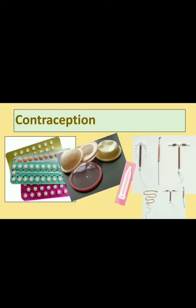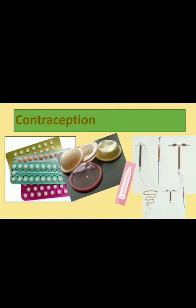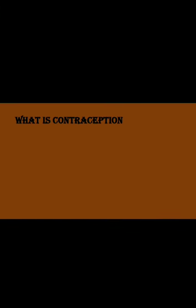Contraception saves women's lives and prevents unintended pregnancy. The use of contraception improves the quality of life, makes health better, and reduces emotional stress. There are benefits enjoyed by the couples, children, other family members, the community, and the country. So what is contraception — how will we define it?